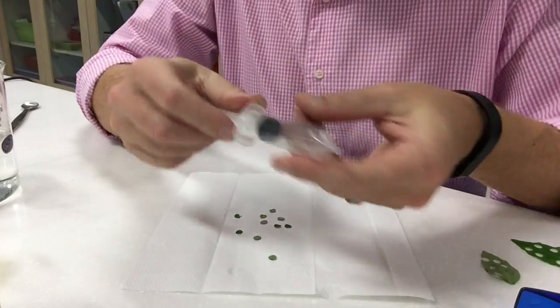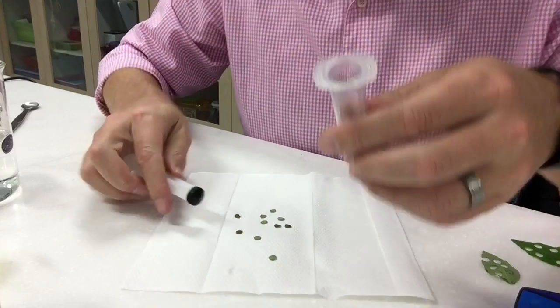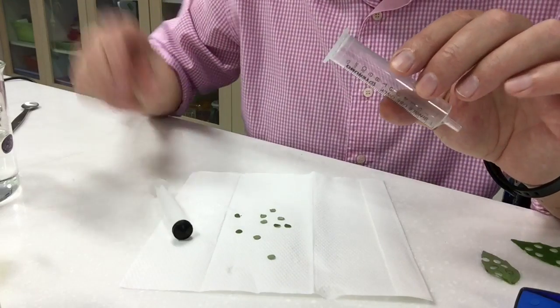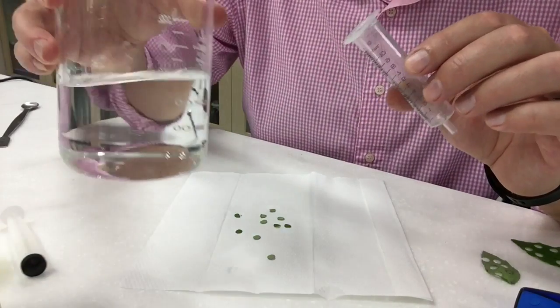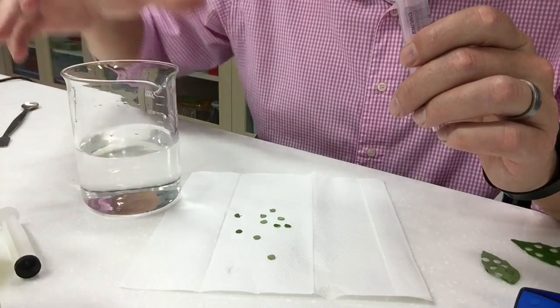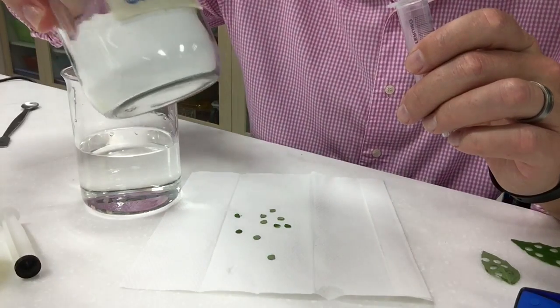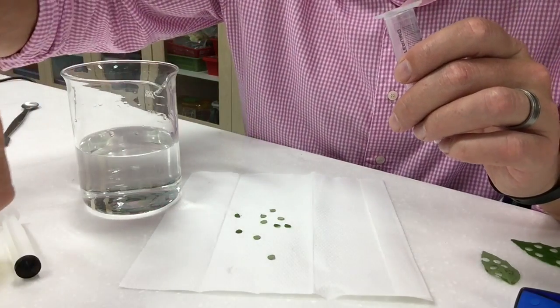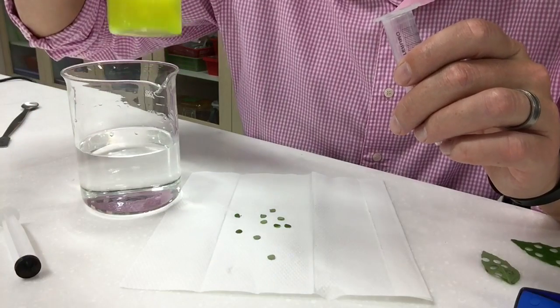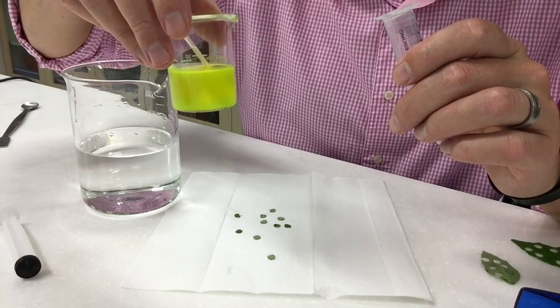So what you need to do is you need to take a syringe, 10 mil syringe, and take out the plunger. Now I've already created this solution but this solution is about 500 mils of water with about a gram of sodium bicarbonate and a number of drops of detergent.